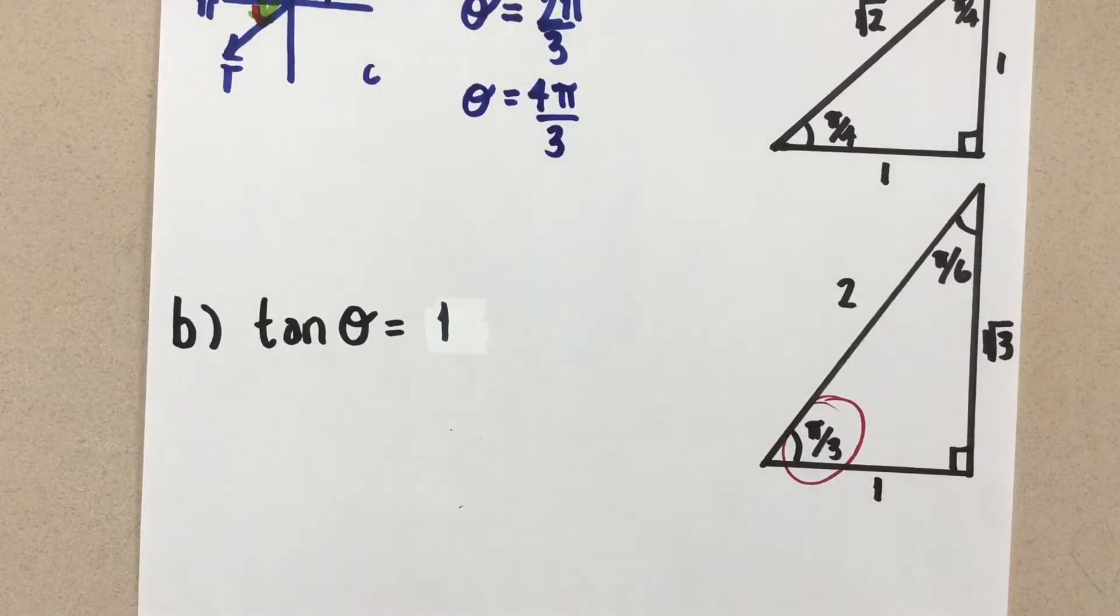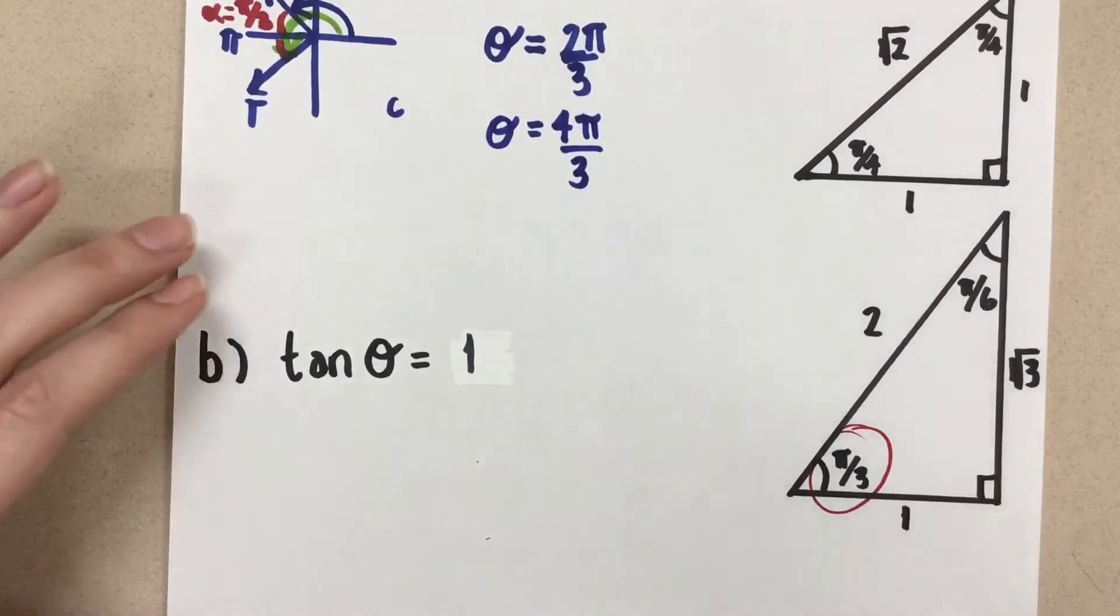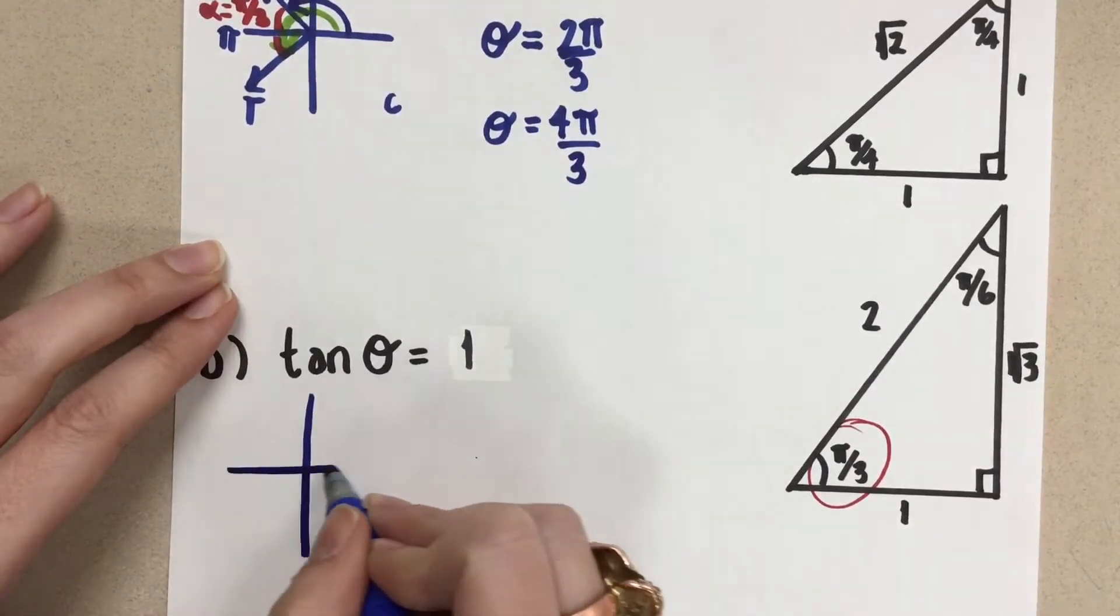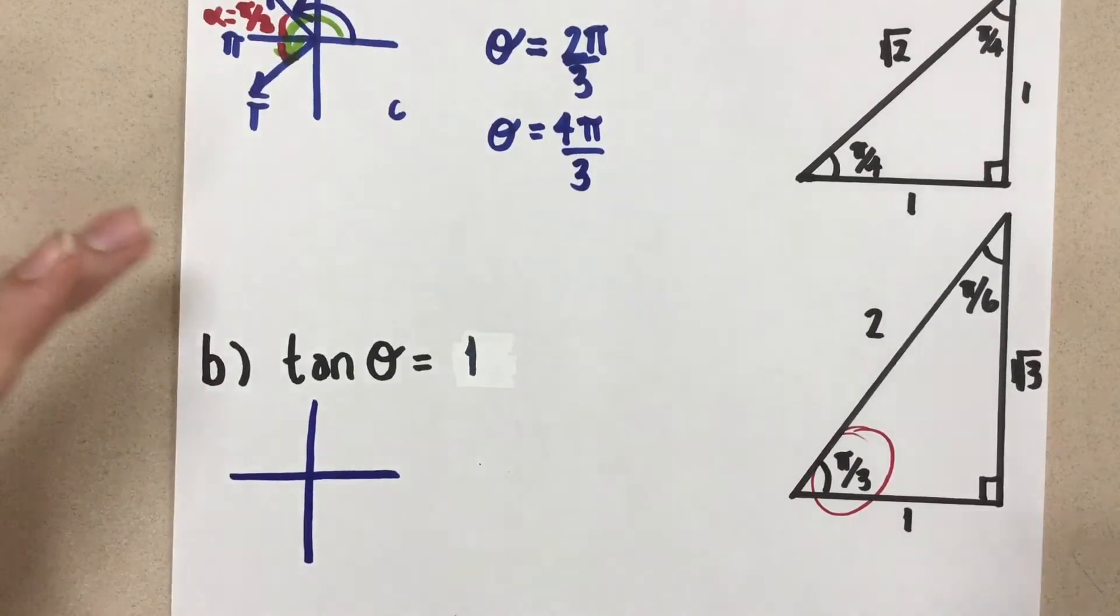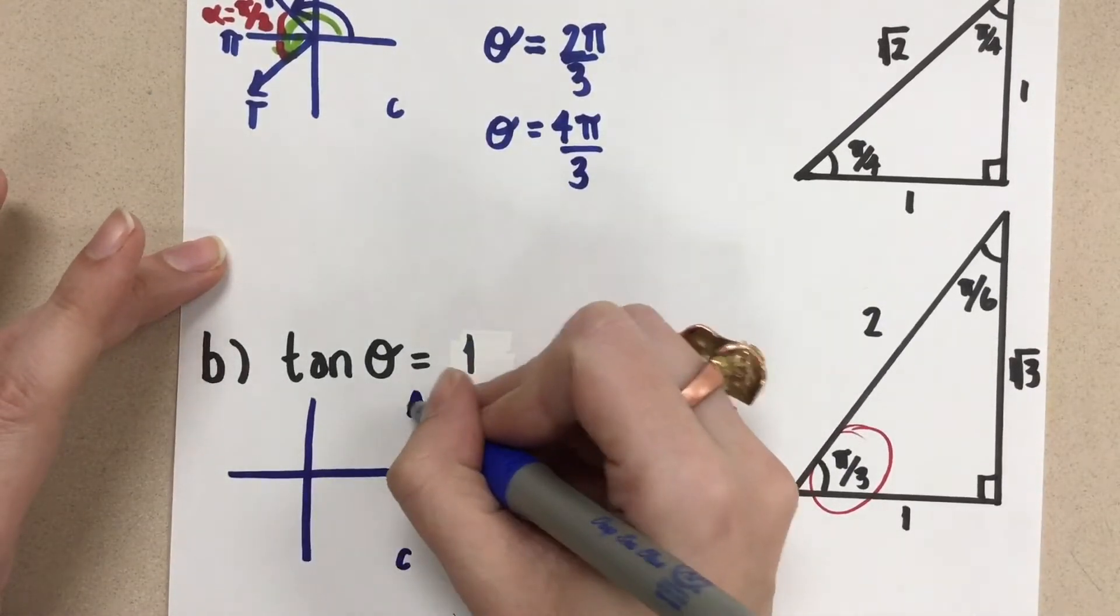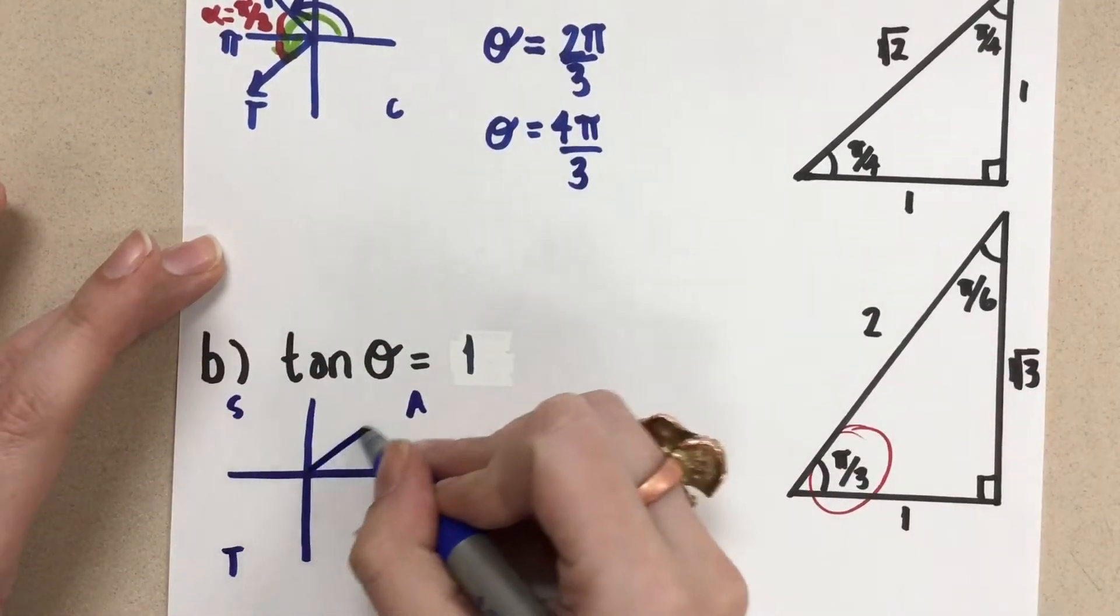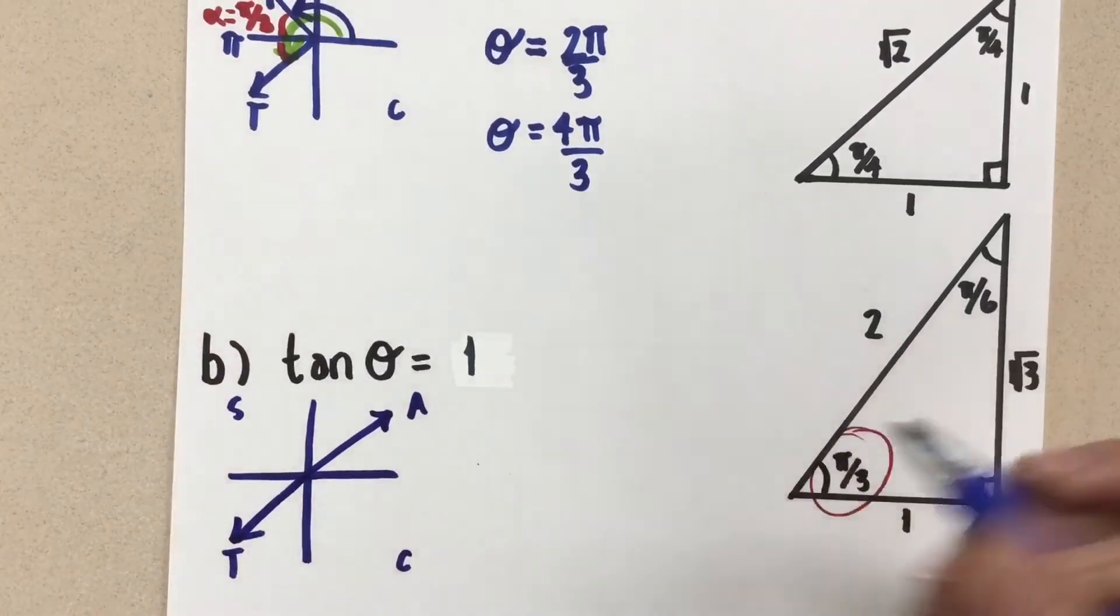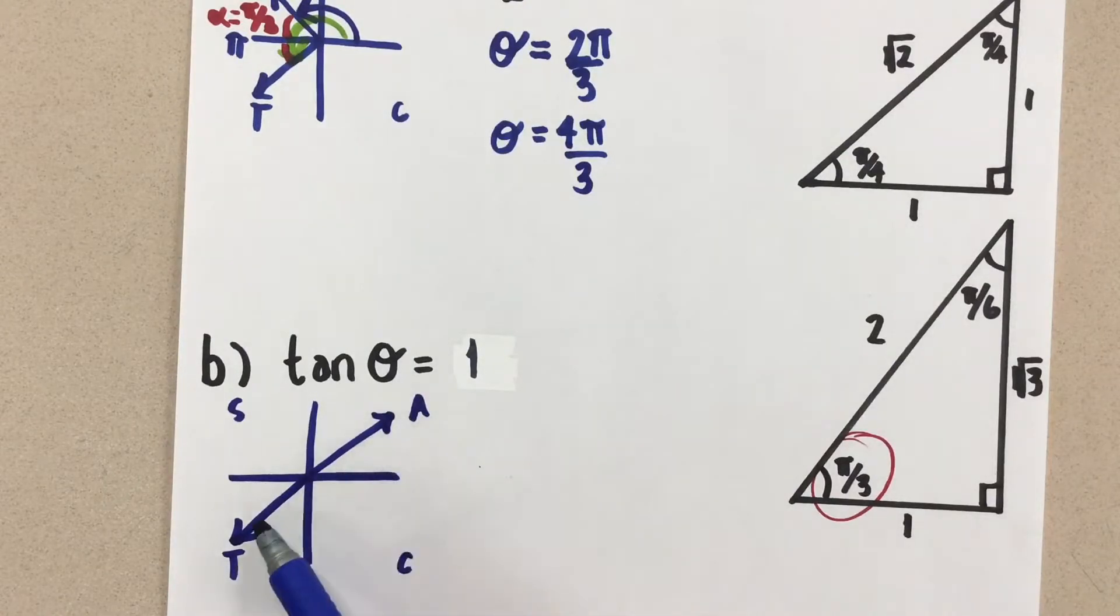Okay, so now let's look at the second question we have here. Now we have tangent theta equals one. So we have tangent of theta equals positive one. We want to go to the Cartesian plane again and figure out where the tangent ratio is going to be positive. And so we think about our CAST rule, and the tangent ratio is positive in the first quadrant and in the third quadrant. So both of our angles that will satisfy this ratio are going to be here and here.